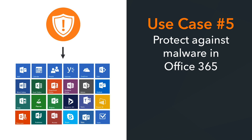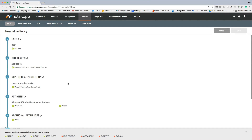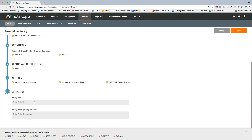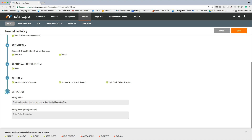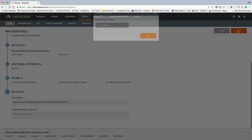The last use case is malware protection. Netscope provides advanced malware protection, enabling you to find and quarantine malware in sanctioned cloud services like Office 365, and stop malware in real time from making its way into environments like Office 365.